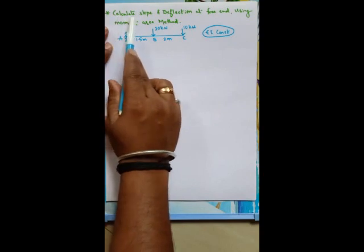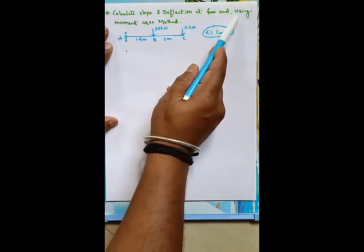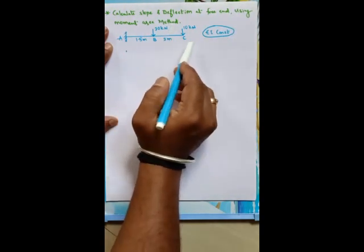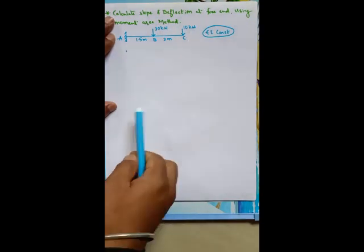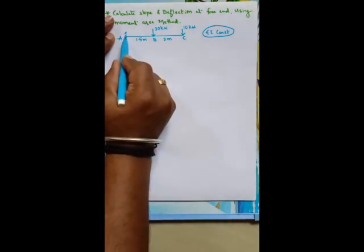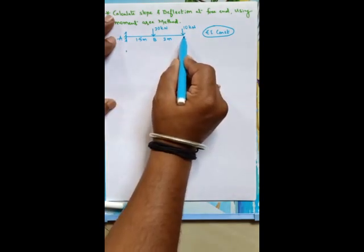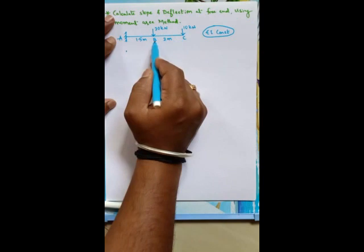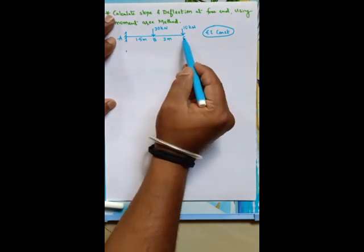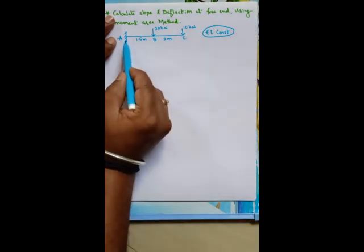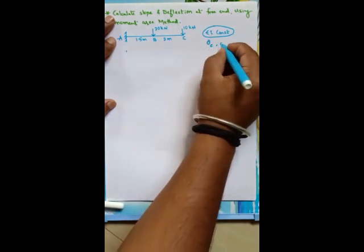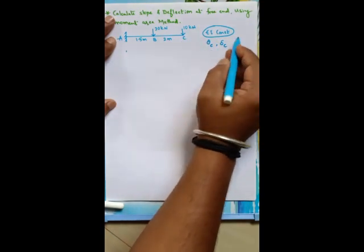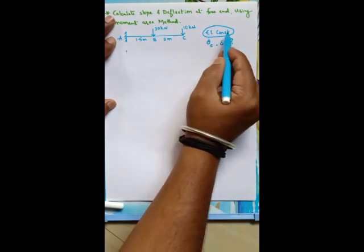Now let us solve a problem: a cantilever beam subjected to two point loads. Calculate slope and deflection at the free end using the moment area method. The fixed support is at point A (fixed end) and point C is the free end, with point B as an intermediate point. We need to find theta_C (slope at C) and delta_C (deflection at C). EI is given as constant.